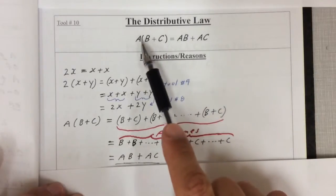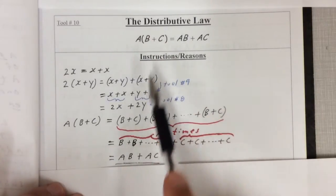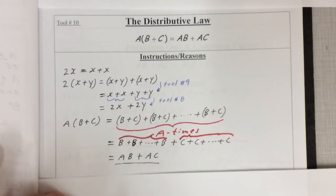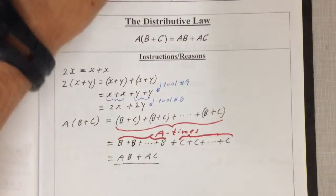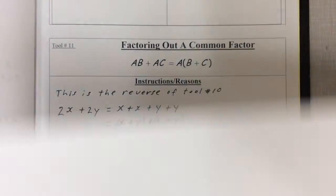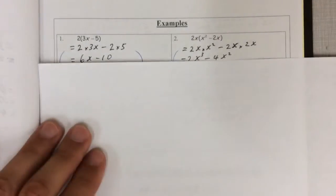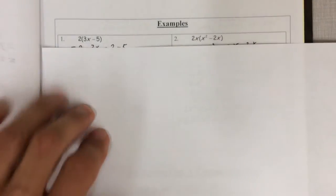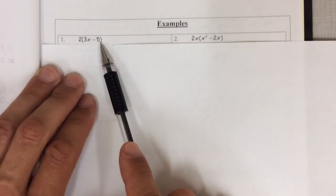What you're doing is distributing a into each term and multiplying it. So some examples on this. Example 1: 2 times 3x minus 5.